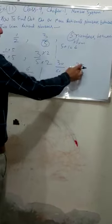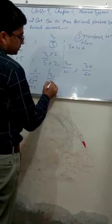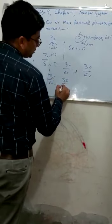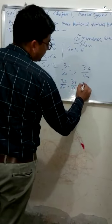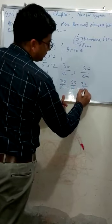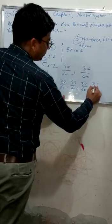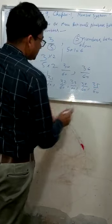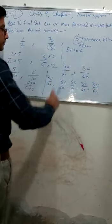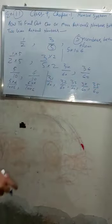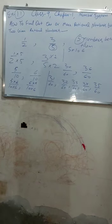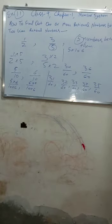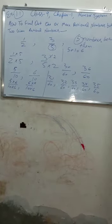Between 30 upon 60 and 36 upon 60, the five rational numbers are: 31 upon 60, 32 upon 60, 33 upon 60, 34 upon 60, and 35 upon 60. That gives us 5 numbers — 1, 2, 3, 4, 5. Now you can do Exercise 1.1. Thank you everyone.